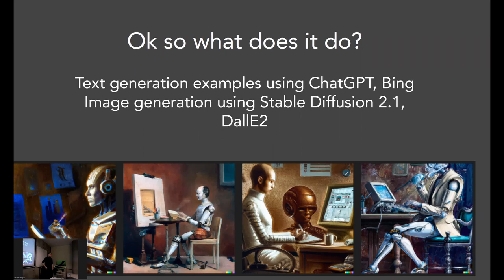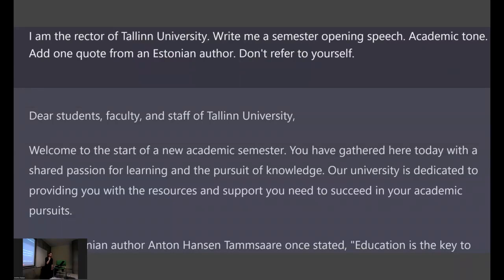So that's a quick theoretical overview of what these things are. Any questions so far? I'd like to devote some time to practical examples — from ChatGPT and Bing, and also image generation samples. Those of you who have tried it know how it works: you put in a sentence and it gives you something. If you give it something vague, then it gives you a vague answer. If you give it something specific, then you get something better.